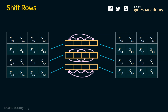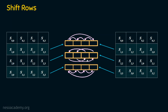Coming to the third row, it takes a two-position jump. Before shifting we have S[2][0], S[2][1], S[2][2], and S[2][3]. After a two-byte shift: S[2][3] takes the position of S[2][1], S[2][2] takes the S[2][0] position, S[2][0] moves forward, and S[2][1] shifts accordingly. This is the shift row operation on the third row — a two-byte left circular shift.